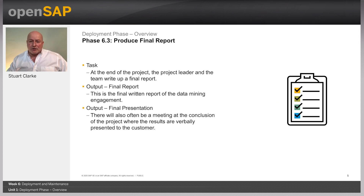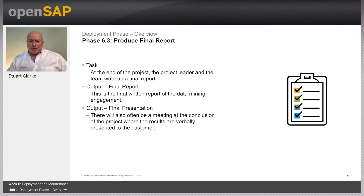At the end of the project, the project leader and the team write up a final report. Depending on the deployment plan, this report may be only a summary of the project and its experiences, if these have not already been documented as an ongoing activity. Or, it may be a final and comprehensive presentation of the data science project results. The output will include a final report of the data science engagement, including all of the previous deliverables and summarizing and organizing the results.